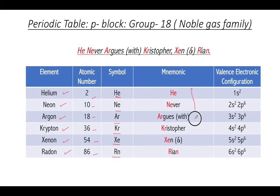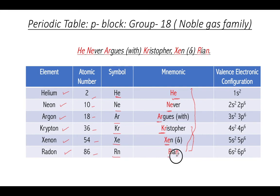The mnemonic for Group 18 is: 'He never argues with Christopher Zen and Ryan.' He's H stands for helium, 'never' gives Ne for neon, 'argues' gives Ar for argon, Christopher's Kr is for krypton, Zen's X is for xenon, and from Ryan you take R and N which stands for radon.